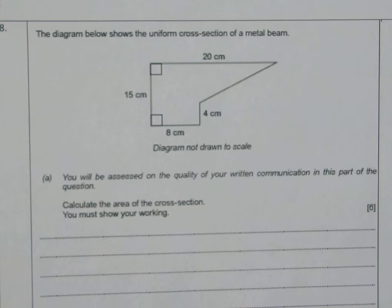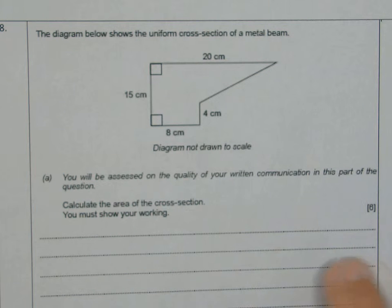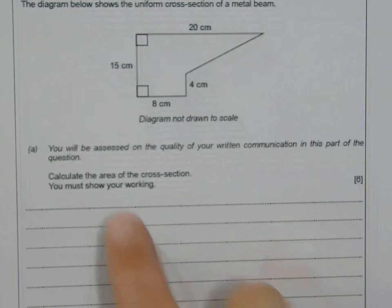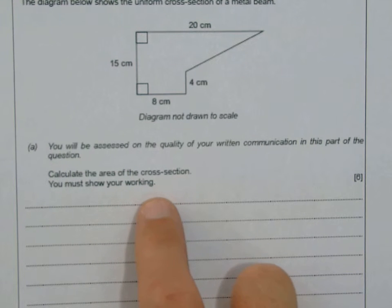If you look at this one here, the diagram below shows a uniform cross-section of a metal beam. So when you ask what is a cross-section, I'll explain in a minute. It says calculate the area of the cross-section — you must show your working.